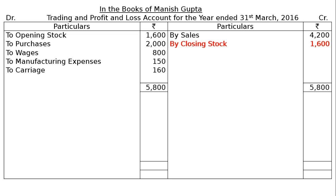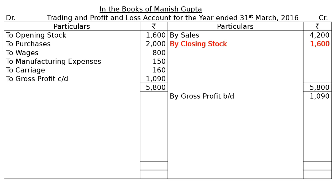Write the credit total of Rs. 5800 on the debit side and find the difference to get gross profit carried down, which is Rs. 1090. This gross profit carried down will be taken to the profit and loss account as 'by gross profit brought down Rs. 1090'.